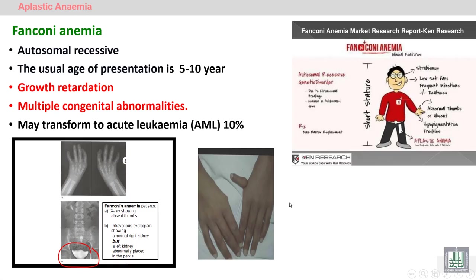Fanconi anemia is a specific type of aplastic anemia characterized by growth retardation and short stature, as you can see, with multiple congenital abnormalities which can be diagnosed clinically. Abnormal findings may require radiological examination in order to confirm the diagnosis.